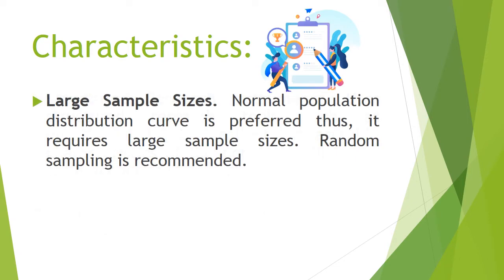Next, large sample sizes. To arrive at a more reliable data analysis, a normal population distribution curve is preferred. This requires a large sample size, depending on how the characteristics of the population vary. Random sampling is recommended in determining the sample size to avoid researchers' bias in interpreting the results.